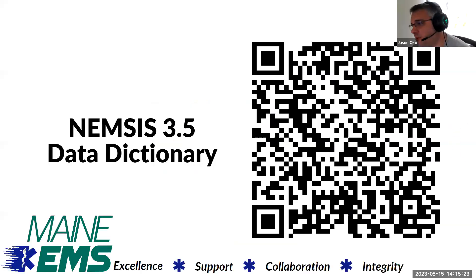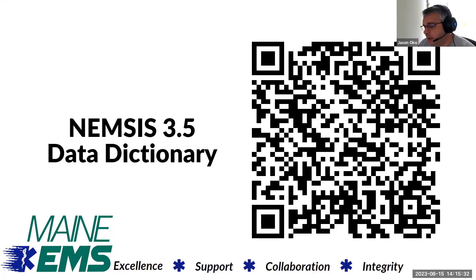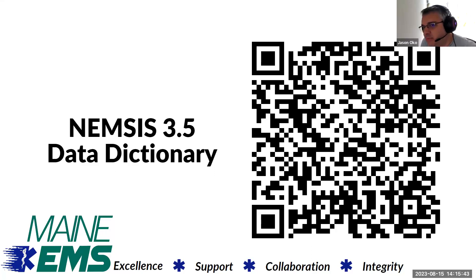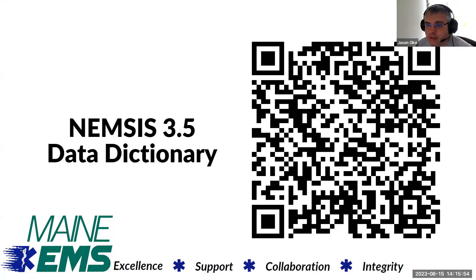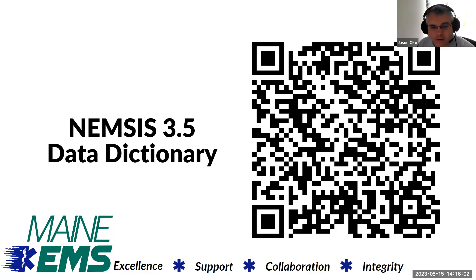This is the NEMSIS 3.5 data dictionary. You can scan this QR code — this is the digital version of the NEMSIS 3.5 data dictionary. It is an awesome resource for you and your crews. If you have questions on elements — when we say this is a NEMSIS required field — this document will also help explain why some of these elements are required. I use this daily and share it with someone at least twice a week. I would encourage folks to scan that QR code and check that data dictionary out.